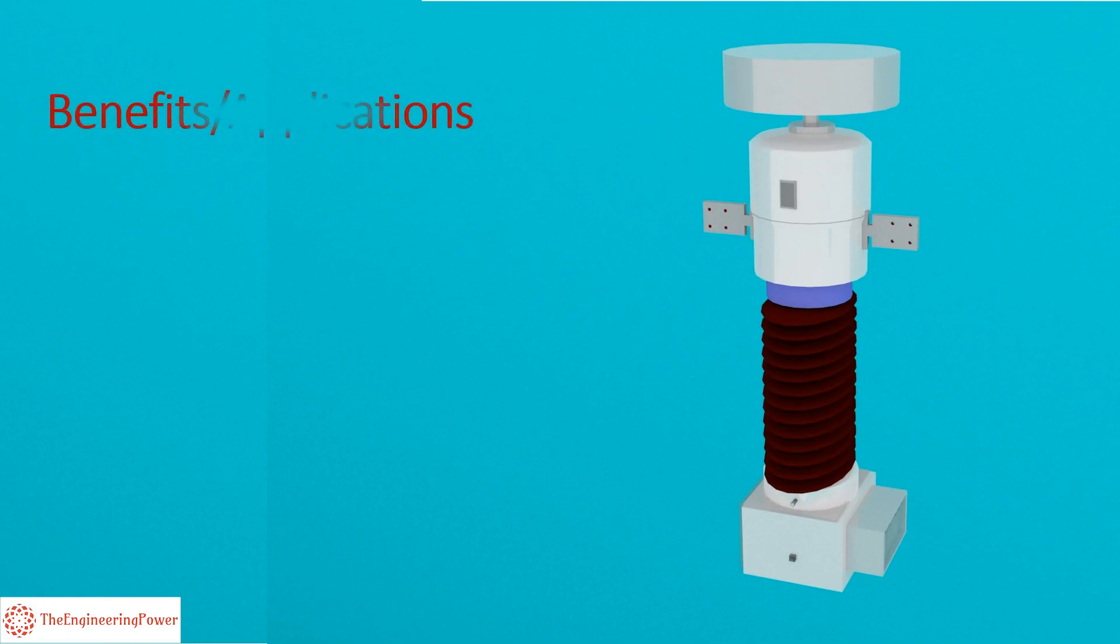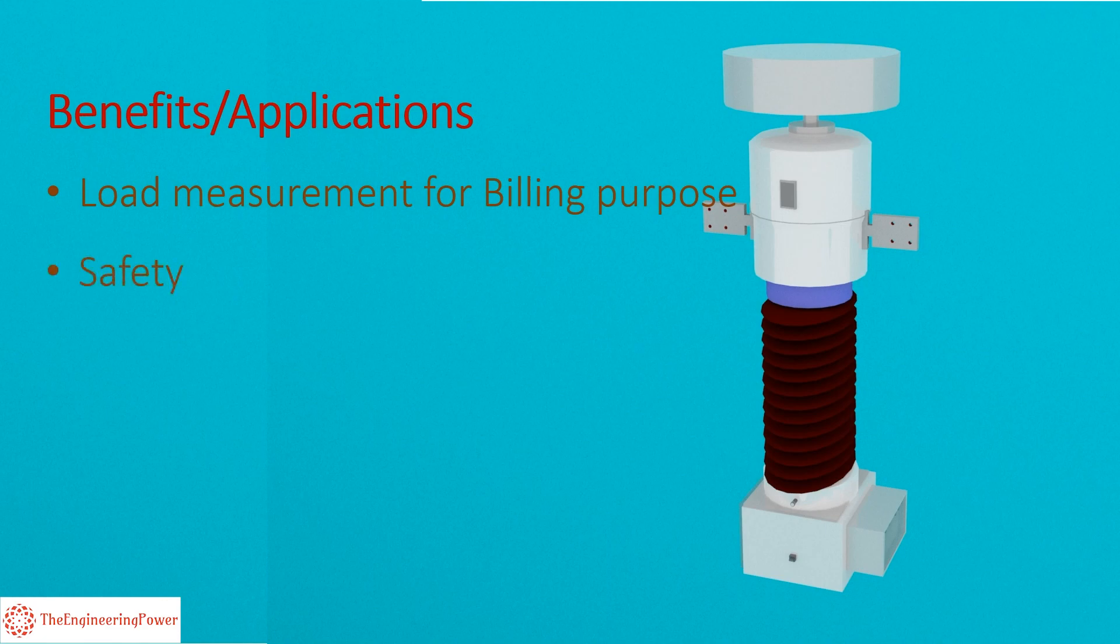Next we explain some of the benefits and applications of CTs. CTs are used by utility companies for measuring the load for billing purpose. CTs provide a safe way to provide current without directly connecting the ammeter to high voltage circuits. CTs can provide very accurate measurements of current even in the presence of noise and other disturbances. CTs are relatively inexpensive and hence a cost-effective solution for measuring high currents.